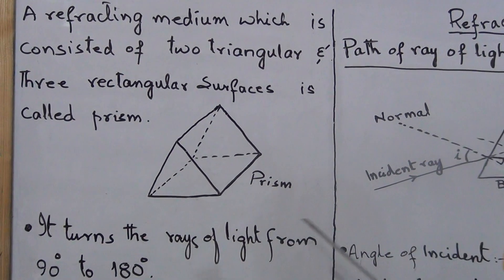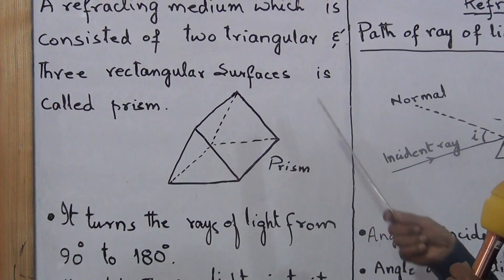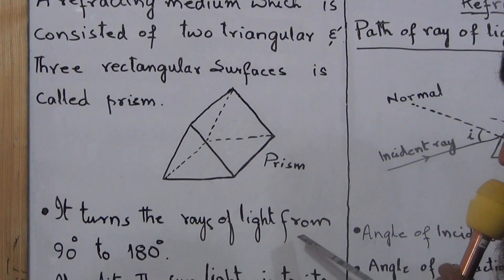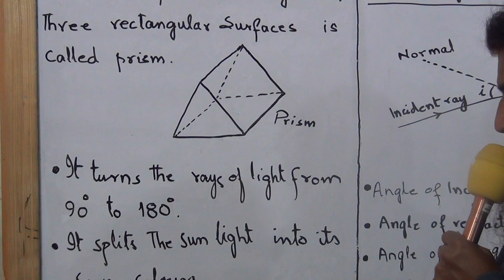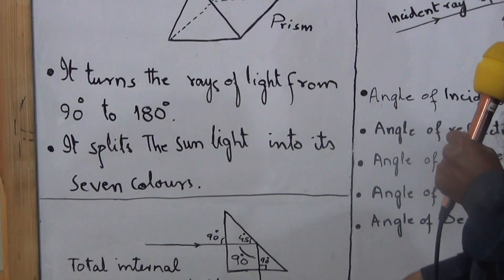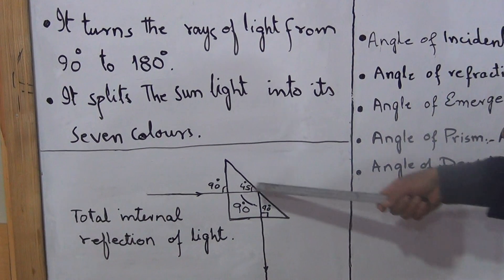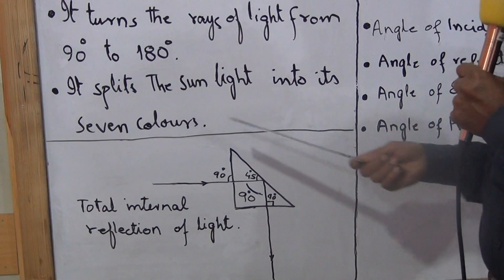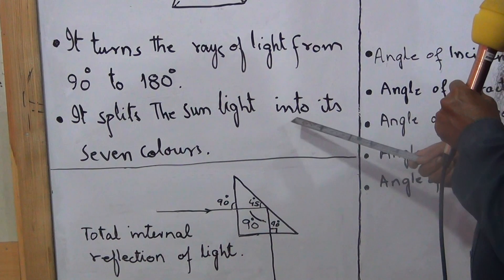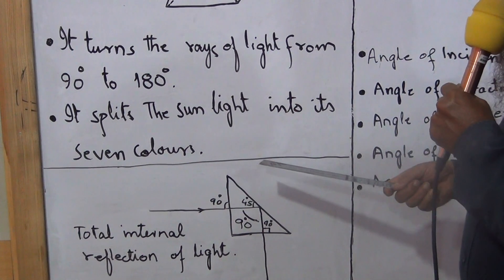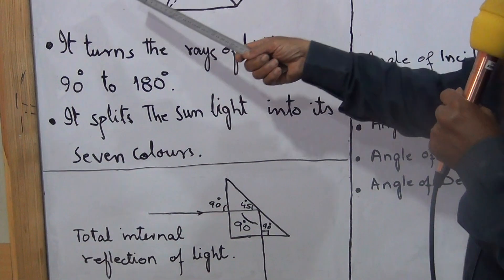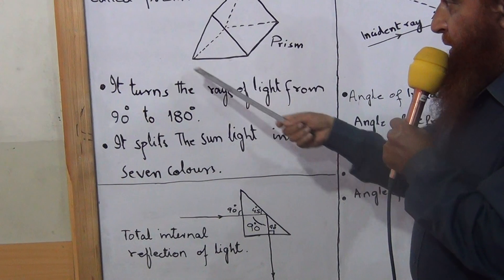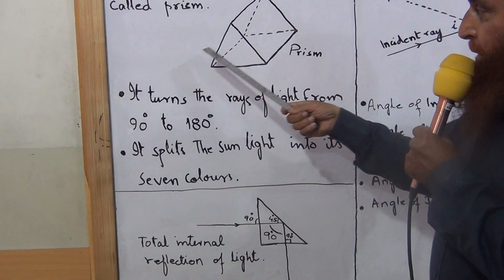These surfaces are bounded together to make the prism. It refracts the rays of light and can turn rays from 90 degrees to 180 degrees. If we add another prism, it becomes 180 degrees. Number two: it splits sunlight into its seven colors. Sunlight is split by the prism into seven colors, so the prism is used for the dispersion of sunlight.